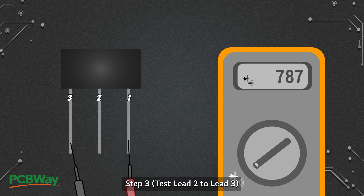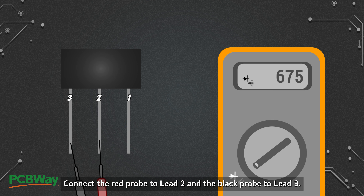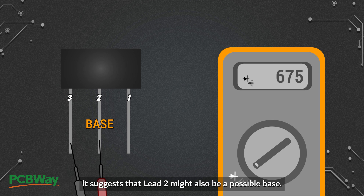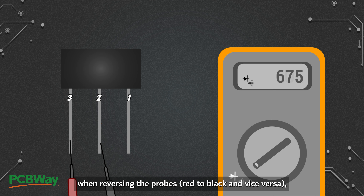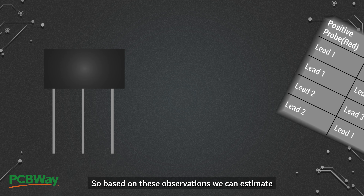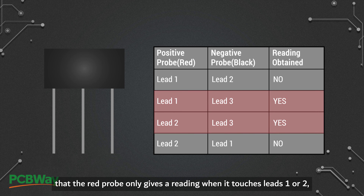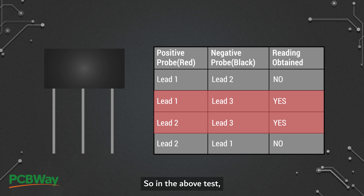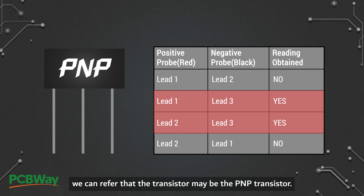Step 3: Connect the red probe to lead 2 and the black probe to lead 3. If there is another reading on the multimeter, it suggests that lead 2 might also be a possible base. However, when reversing the probes, no reading is obtained. Based on these observations, the red probe only gives a reading when it touches leads 1 or 2, which means those two leads are positive relative to the third lead. We can therefore conclude that the transistor may be a PNP transistor.